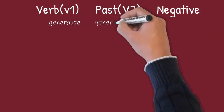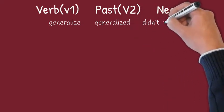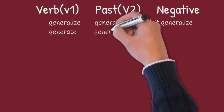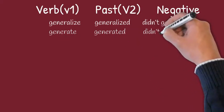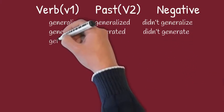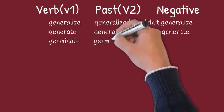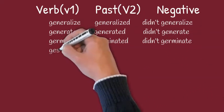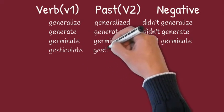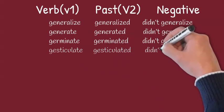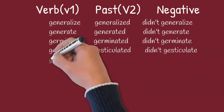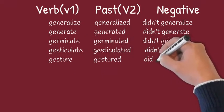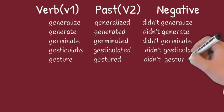Generalize, generalized, didn't generalize. Generate, generated, didn't generate. Germinate, germinated, didn't germinate. Gesticulate, gesticulated, didn't gesticulate. Gesture, gestured, didn't gesture.